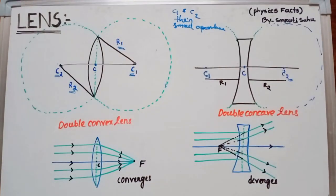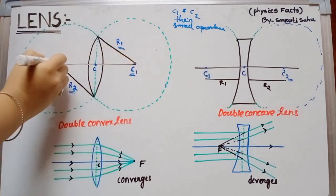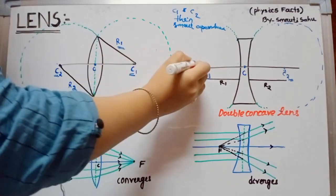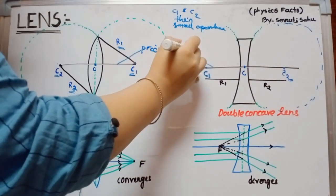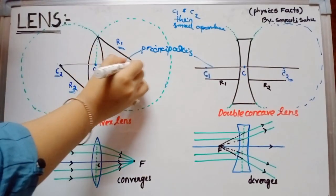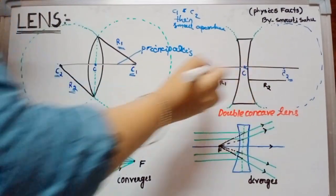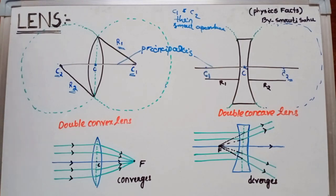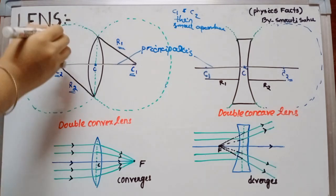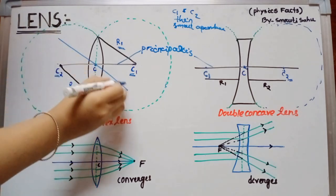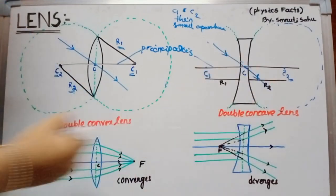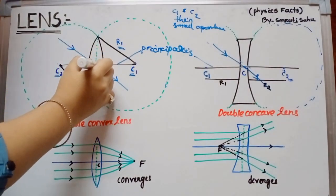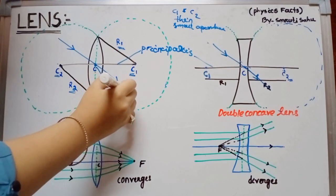The line joining the two centers of curvature is known as the principal axis, and the principal axis must pass through the optical center. The optical center is a point through which a ray passes without any deflection — a ray passing through the optical center undergoes no deflection.